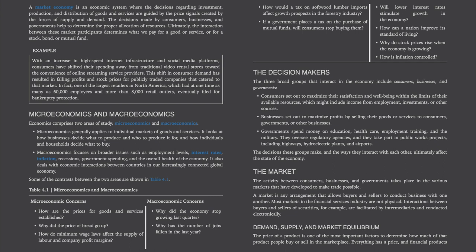The market. The activity between consumers, businesses, and governments takes place in the various markets that have developed to make trade possible. A market is any arrangement that allows buyers and sellers to conduct business with one another. Most markets in the financial services industry are not physical. Interactions between buyers and sellers of securities, for example, are facilitated by intermediaries and conducted electronically.